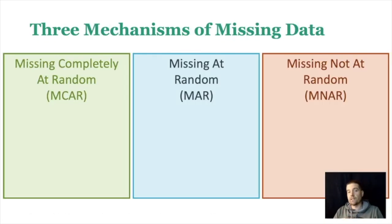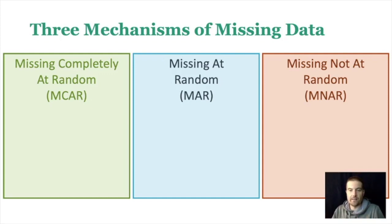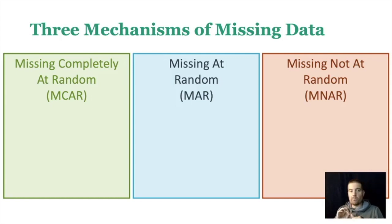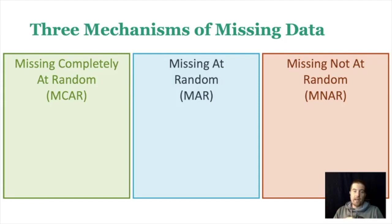There are also three mechanisms of missing data. These are the ways that missingness comes about — why did that person miss that item or that construct? The three are: missing completely at random, missing at random, and missing not at random. The names are not immediately obvious what they mean, and if you really get to know what they mean it starts to make a little more sense, but at face value they're not super obvious. So let's talk about each of these.